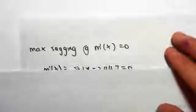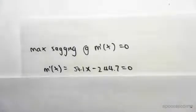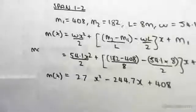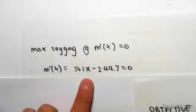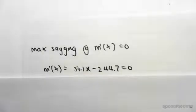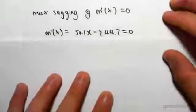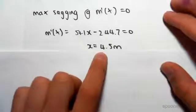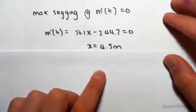Differentiating the moment equation, we get 54.1x minus 244.7 equals zero. Solving this for x, we get 4.5 meters. So the maximum sagging occurs at 4.5 meters.